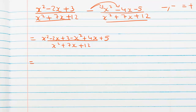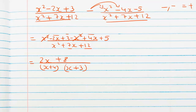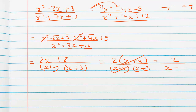Now we factor the denominator: we need two numbers that multiply to 12 and add to 7, which is 4 and 3, giving (x+4)(x+3). For the numerator: x² − x² cancels, −2x + 4x gives 2x, and 3 + 5 gives 8, so the numerator is 2x + 8. Taking out 2 as common gives 2(x+4) over (x+4)(x+3). The (x+4) cancels and the final answer is 2 over (x+3).